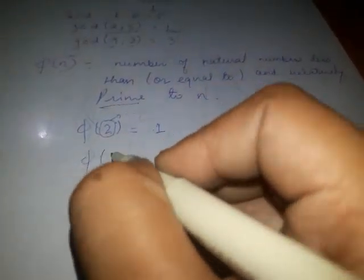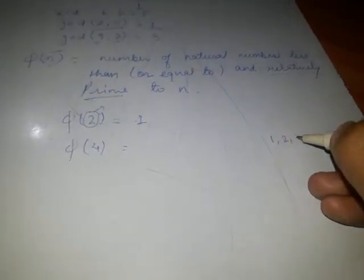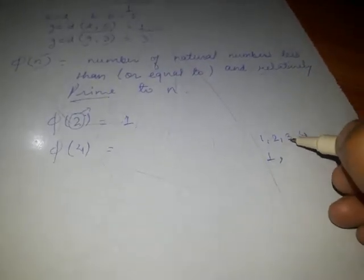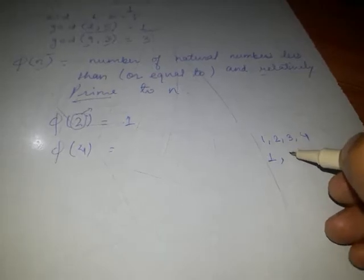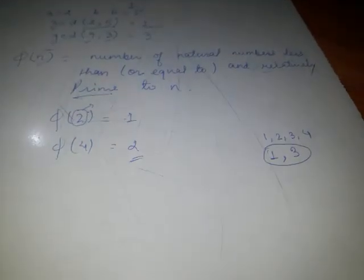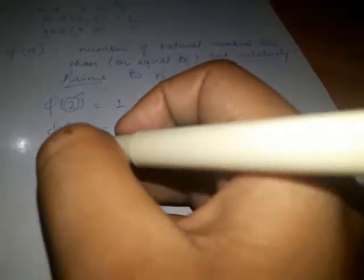For more examples, phi 4. The numbers less than or equal to 4 are 1, 2, 3, and 4. If we see 4 and 1, they are relatively prime. If we see 2 and 4, then GCD of 2 and 4 is 2, so we cannot take it. Similarly, 3 and 4 have GCD 1. So the total number of numbers is 2. We write only the counting of numbers, we do not write the numbers themselves.